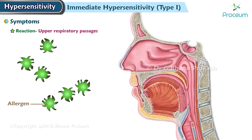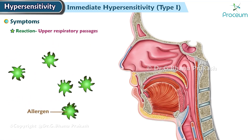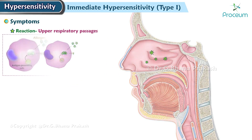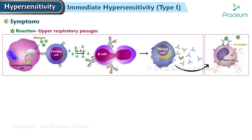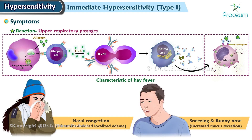If the reaction is limited to the upper respiratory passages after a person inhales an allergen, such as ragweed pollen, the released chemicals bring about the symptoms characteristic of hay fever. For example, nasal congestion caused by histamine-induced localized edema and sneezing and runny nose caused by increased mucus secretion.